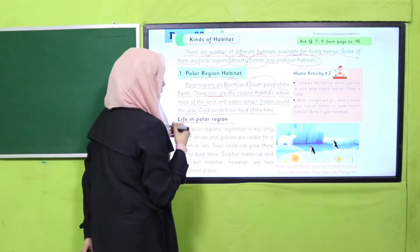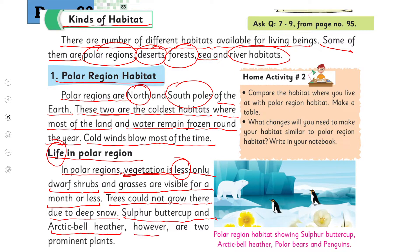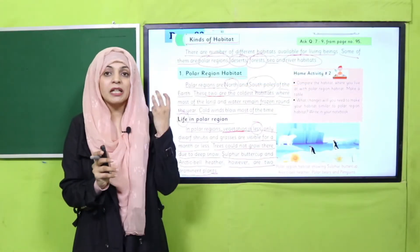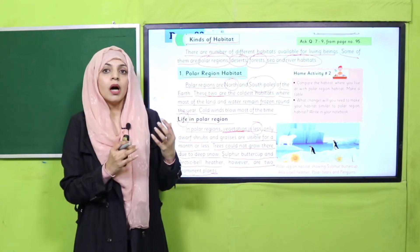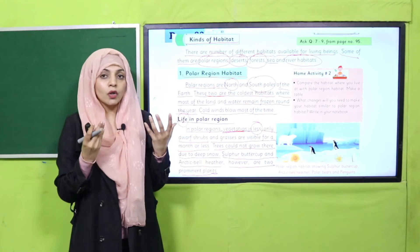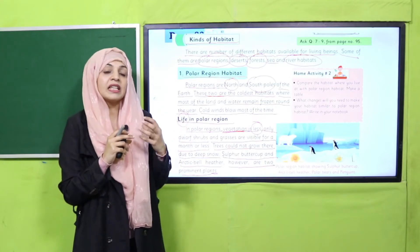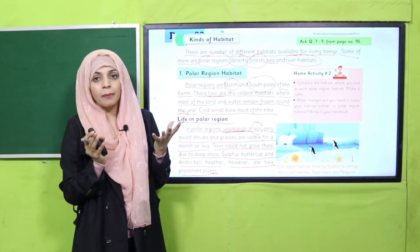Now, life in polar region. In polar regions, vegetation is less - that means there are fewer plants. Only dwarf shrubs and grasses are visible for a month or less. These could not grow there due to deep snow. Sulfur buttercup and Arctic heather, however, are two prominent plants. Wahaan itni zyadha sardi hoti hai ke vegetation - plants - bohut hi kam grow karte hain. Kuch plants for a month or two grow in this region, including sulfur buttercup and arctic heather. Otherwise vegetation na hone ke barabar hai, it is extremely less.